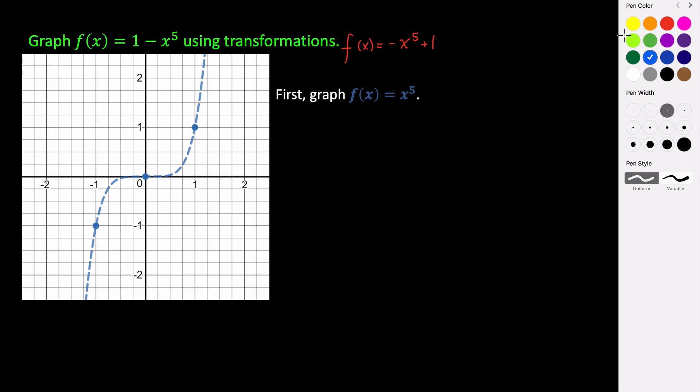Now, the first transformation that I usually would encourage you to use and to graph would be any value of a that's being applied to our parent function. So in this case, we want to know what is this doing to our function. The value of a in this case is -1. So what that does to our graph is it takes all of our y-coordinates and multiplies them by a. So this negative, if you remember, is a reflection about the x-axis.